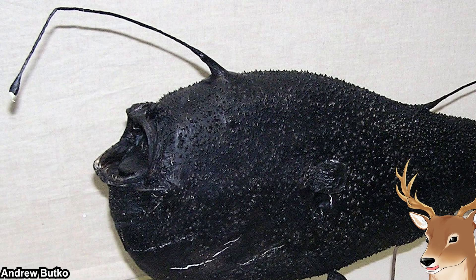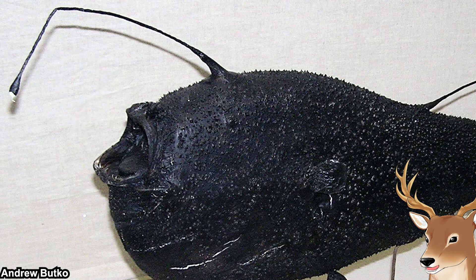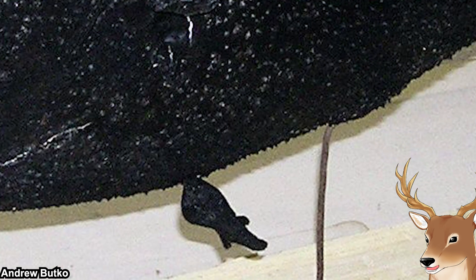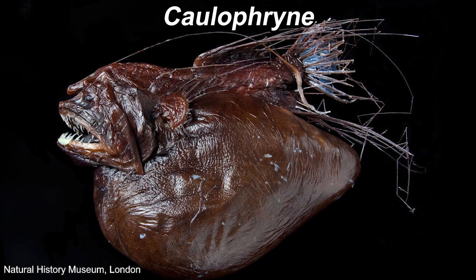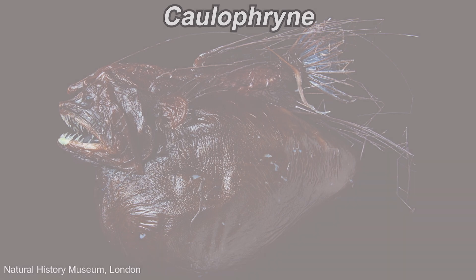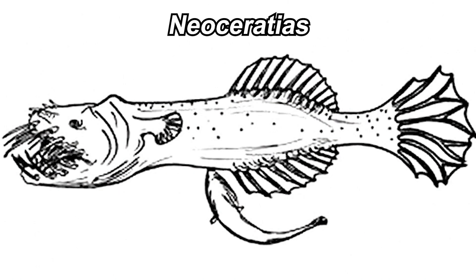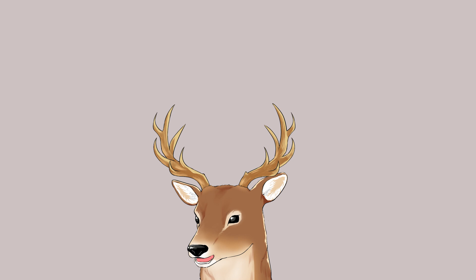Only female deep-sea anglerfish have esca, because the males are parasitic to the female and are basically less developed. Some groups of deep-sea anglerfish also don't have esca at all, like the Caulophrynidae and Neoceratiidae.